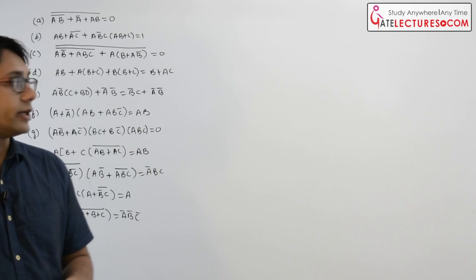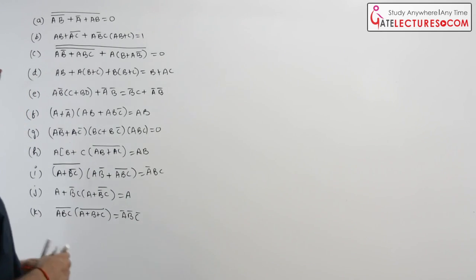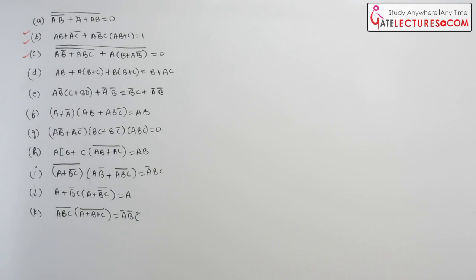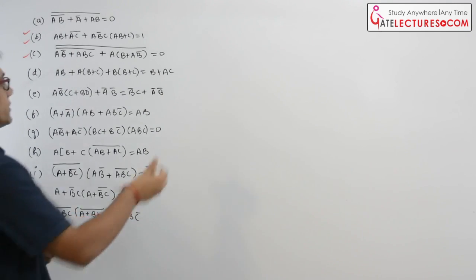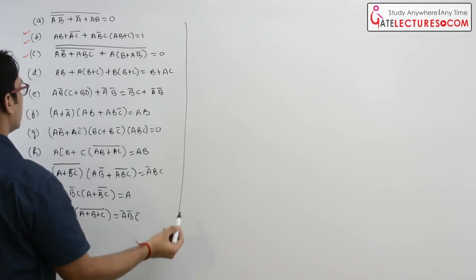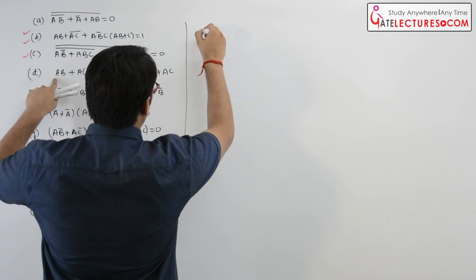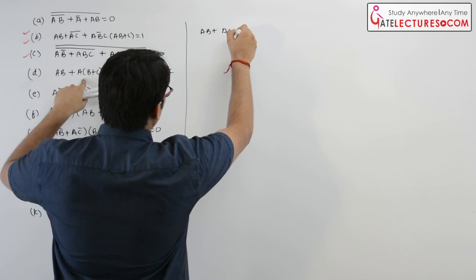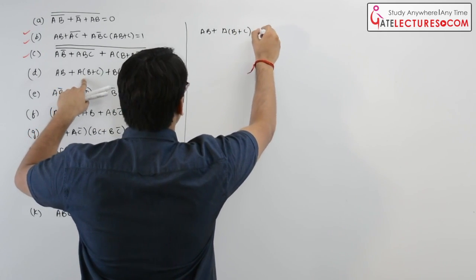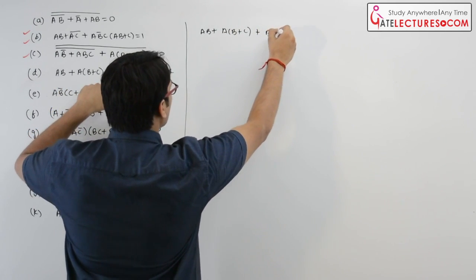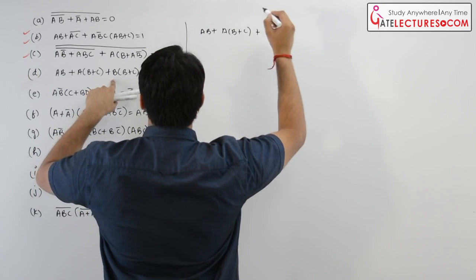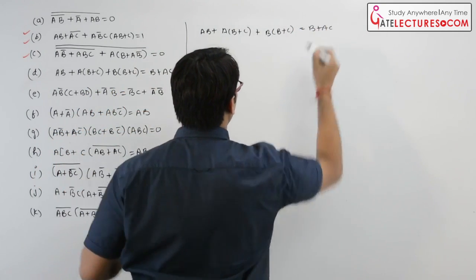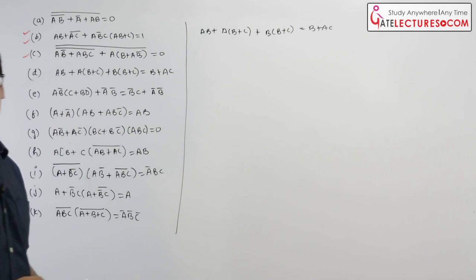In the previous video we have already discussed problems 1, 2, and 3. Now let us discuss the next problem. It says: if we have AB + A(B+C) + B·(B+C), then it is equal to B + AC. So we have to prove this.